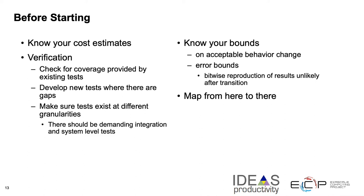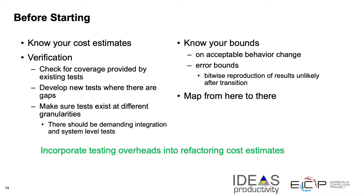Certain behavior change is unavoidable. For example, if you change the order of floating point operations in any code, you cannot guarantee bitwise reproducibility of the answers. So ahead of time you should know how much of that change is acceptable, and you should know error bounds. For the entire team, you should have a map from where you're starting in your code to where you want to get to at the end. Also make sure that testing overheads are incorporated into the refactoring costs — not planning for those can make costs spiral out of control very easily.